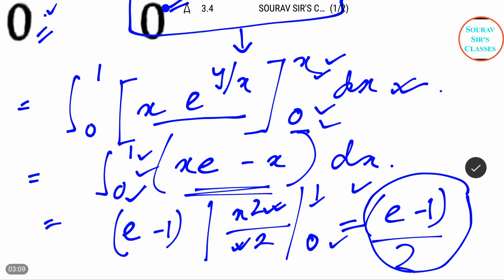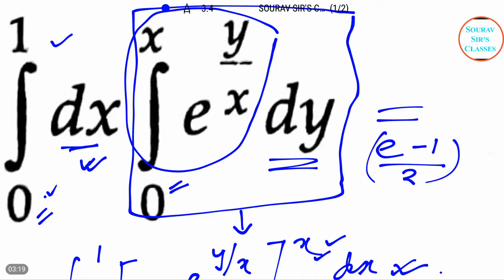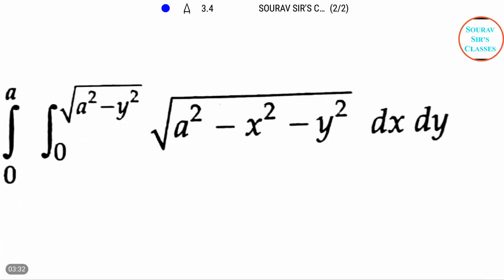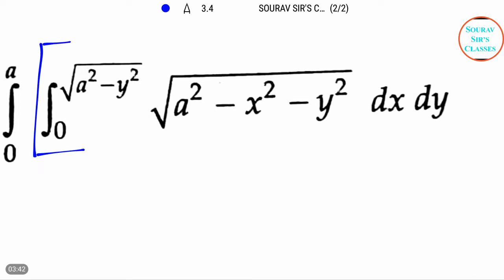So the answer to the first question is (e − 1)/2. Now let's proceed to the next question. In this question, we will again first integrate the inner part, and then integrate the result with respect to dy with limits 0 and a.